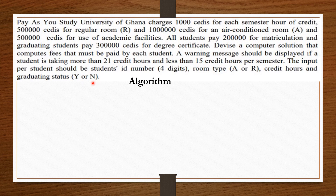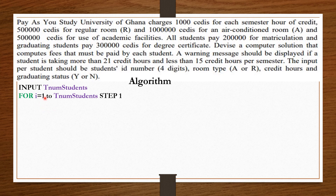For the algorithm, since we are going to compute the fees of each student in the university, we will ask the user to input the total number of students. We set a for loop running from 1 to the total number of students, step 1. This for loop will run from the first student to the last student. Inside the for loop, we ask the student to enter the four-digit ID number.